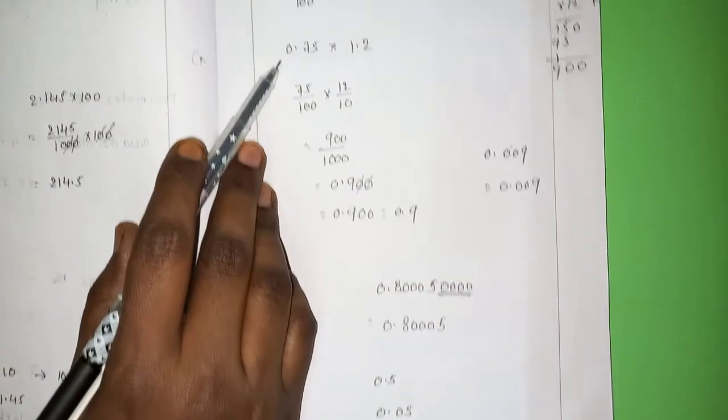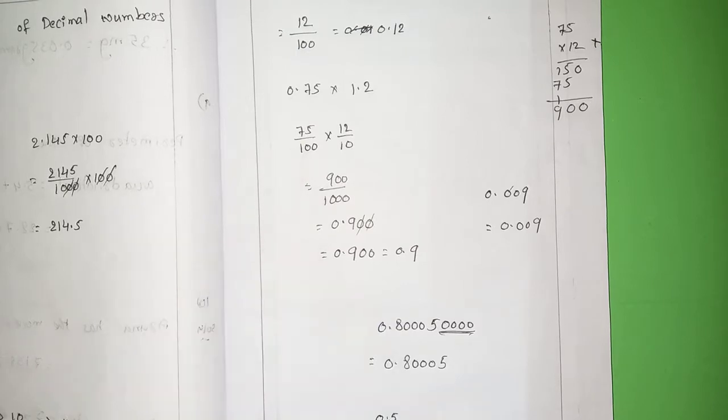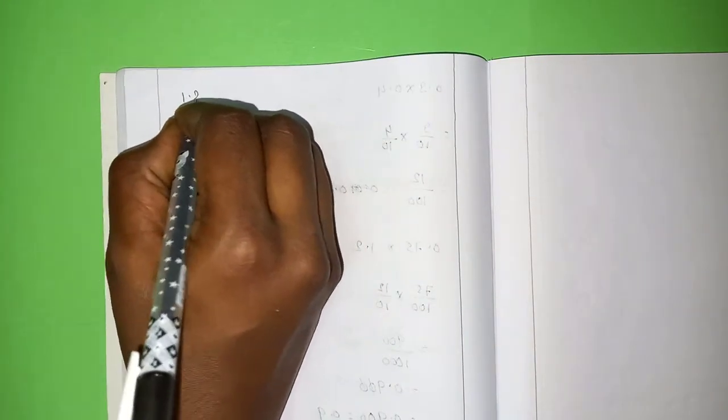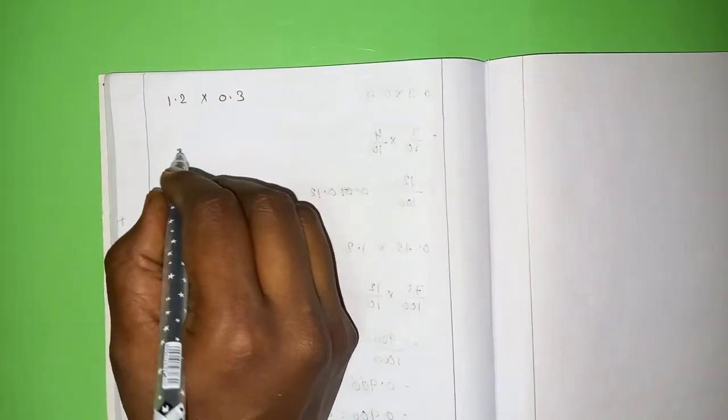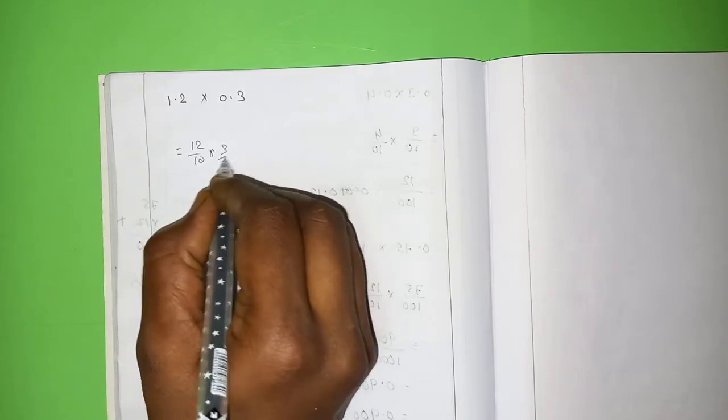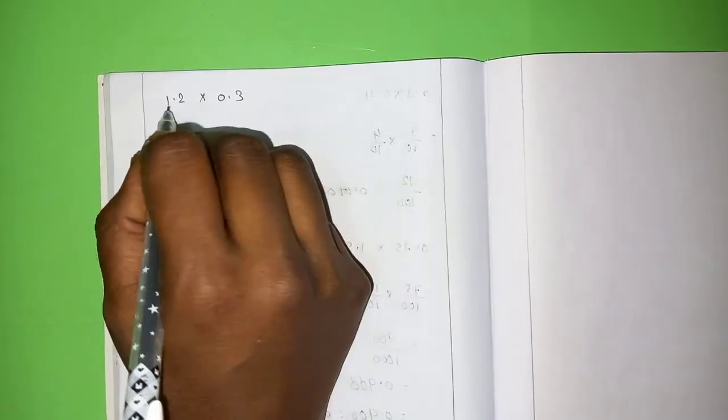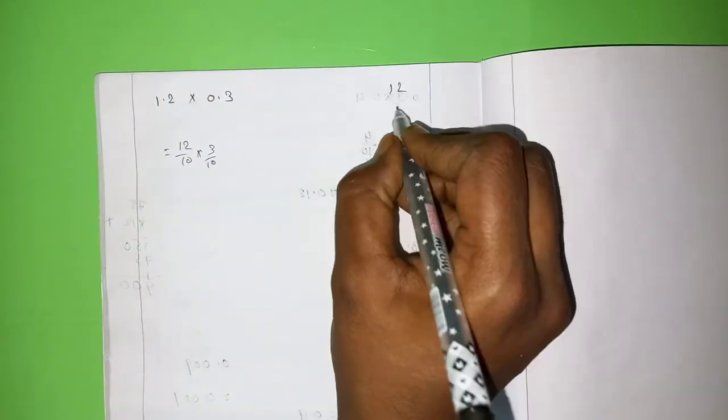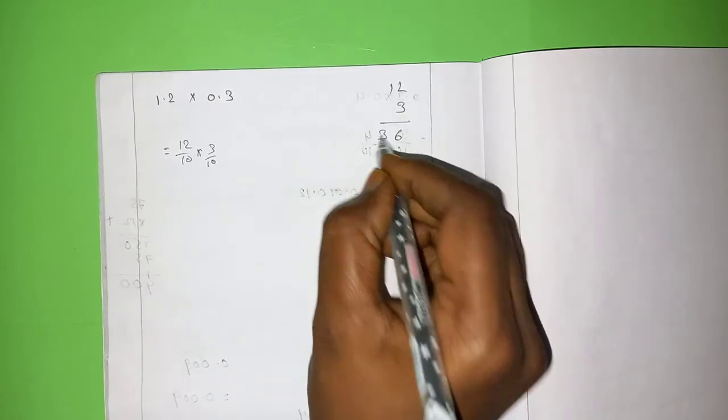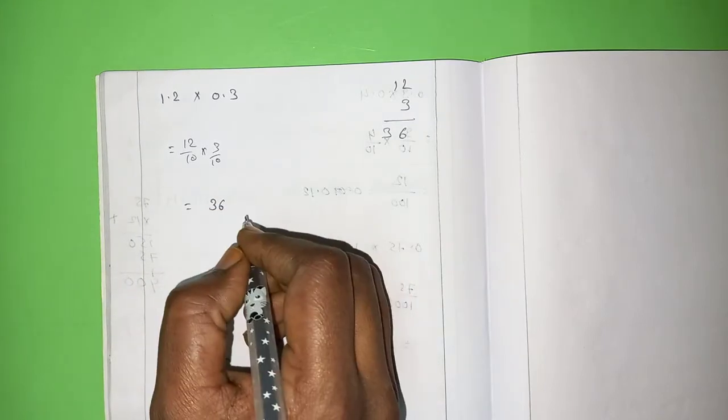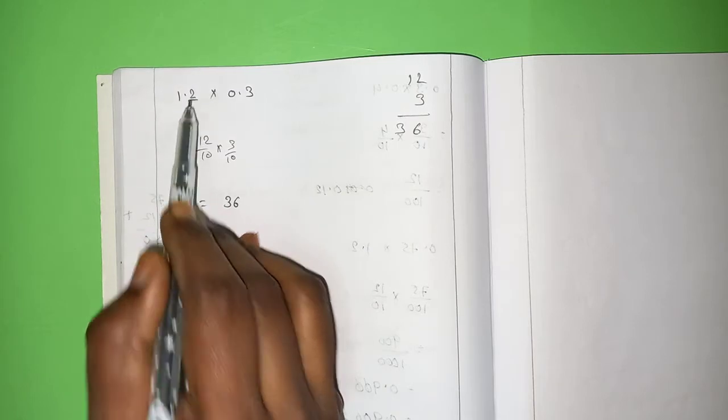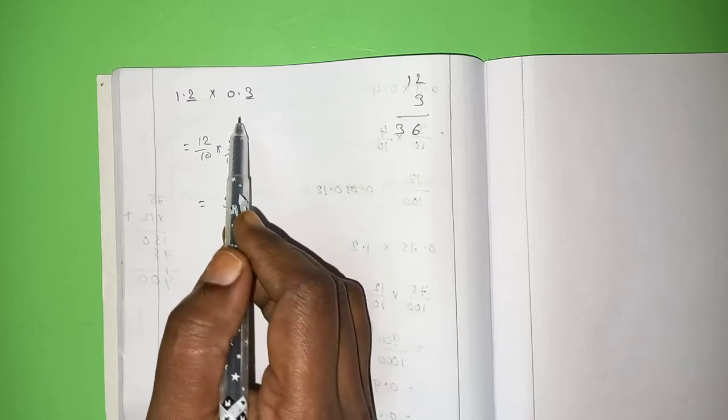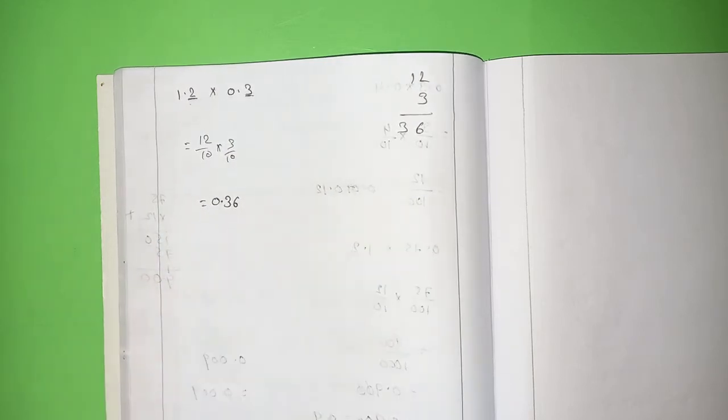You can also calculate the same thing in a different way. 1.2 into 0.3. Instead of doing 12 by 10 into 3 by 10, you can also calculate in a different way. Like, consider it as 12 and consider it as 3. 3 twos are 6. 3 ones are 3. 36. And, where you have to put the dot? After dot, how many numbers are there? How many digits? Only 1. Here, how many? Only 1. 1 plus 1? 2.